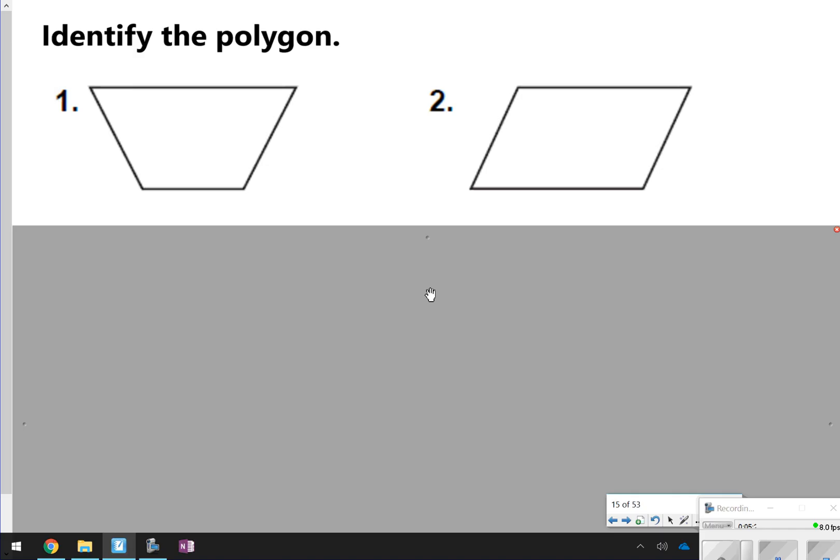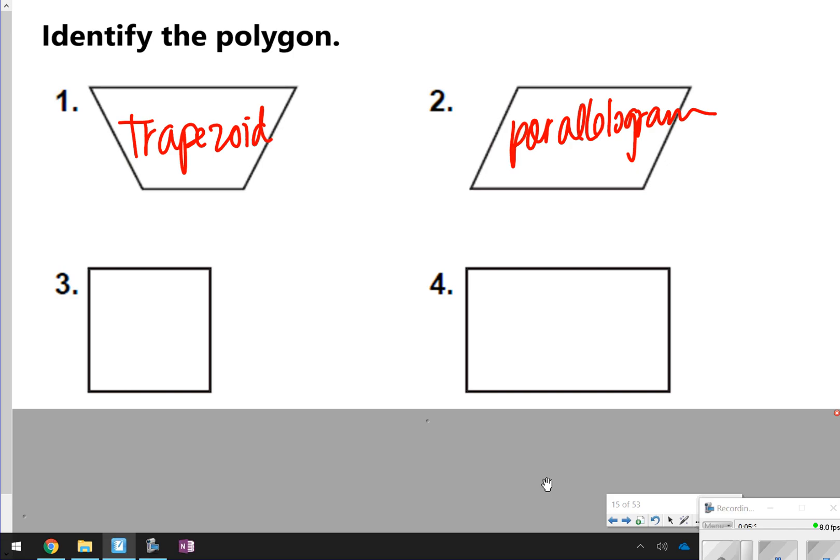All right, so here we go. We're going to try these together. This first one is a trapezoid. Number two is a parallelogram. Three is a square. And four is a rectangle. So again, very, very easy to do.